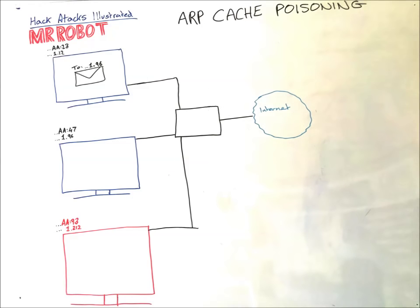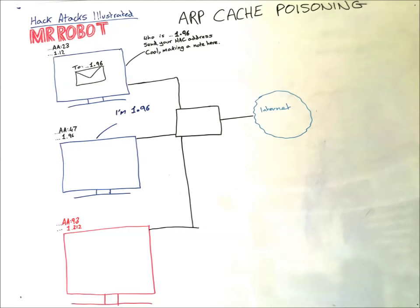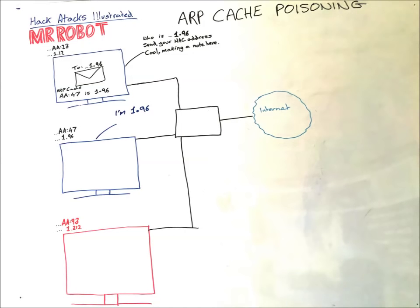What happens when someone wants to talk to another computer nearby using an IP address? Here we have a packet for .1.96. What happens is the computer just asks everyone nearby, who is .1.96? Or to put it another way, what is the MAC address for .1.96? The computer with the address replies with its MAC address. And the first computer just makes a note of it in the ARP cache, essentially a list of IP addresses that go with the MAC addresses.